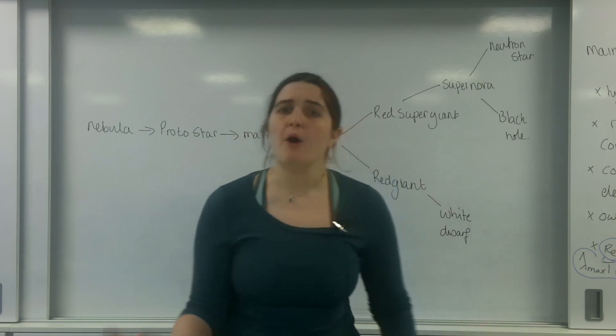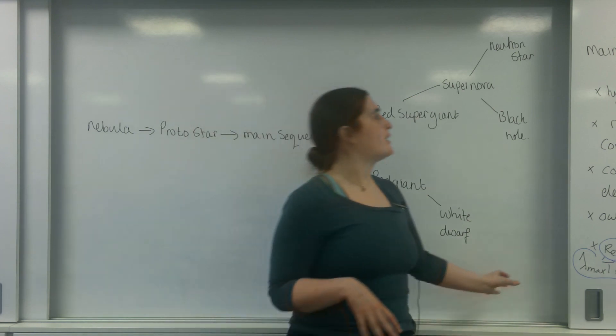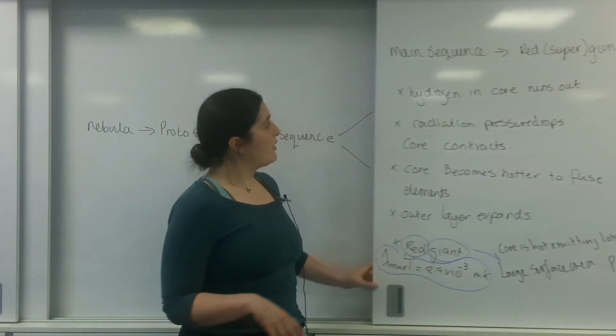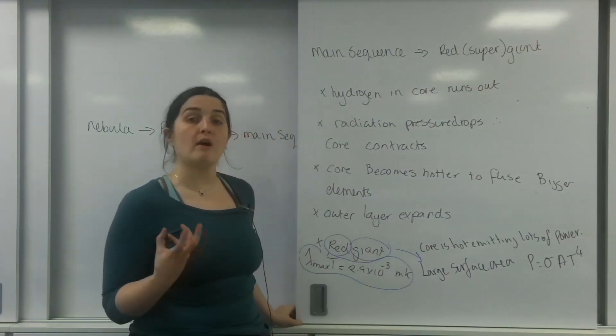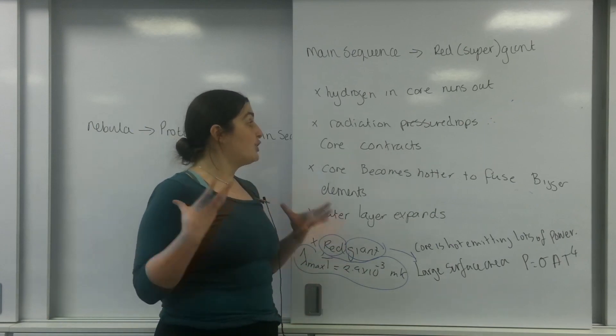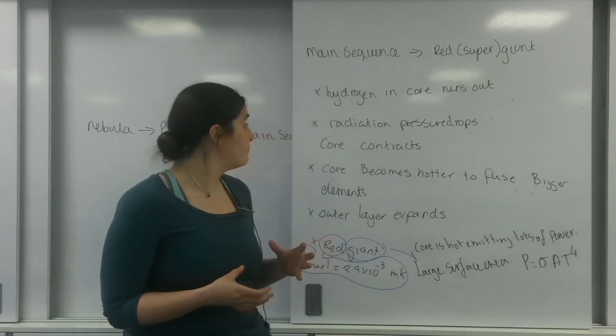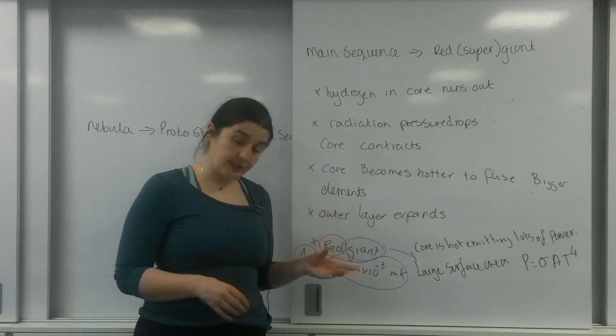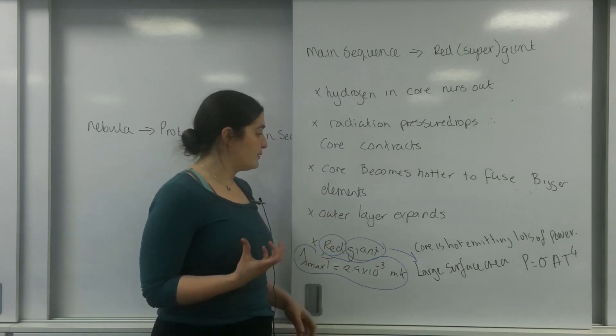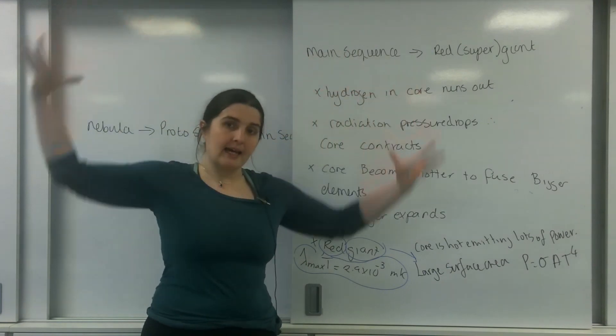I spoke about how a main sequence star becomes a red giant, and it's due to this idea that the hydrogen in the core runs out. So the radiation pressure drops and the core contracts because gravity will win.